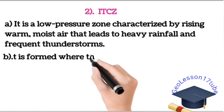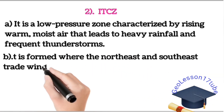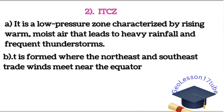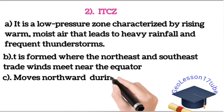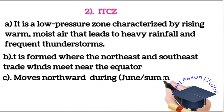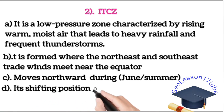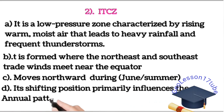ITCZ is formed where the northeast and southeast trade winds meet near the equator. ITCZ moves northward during summer starting from June and southward in December during winter. The shifting of ITCZ primarily influences the annual patterns of rainfall.